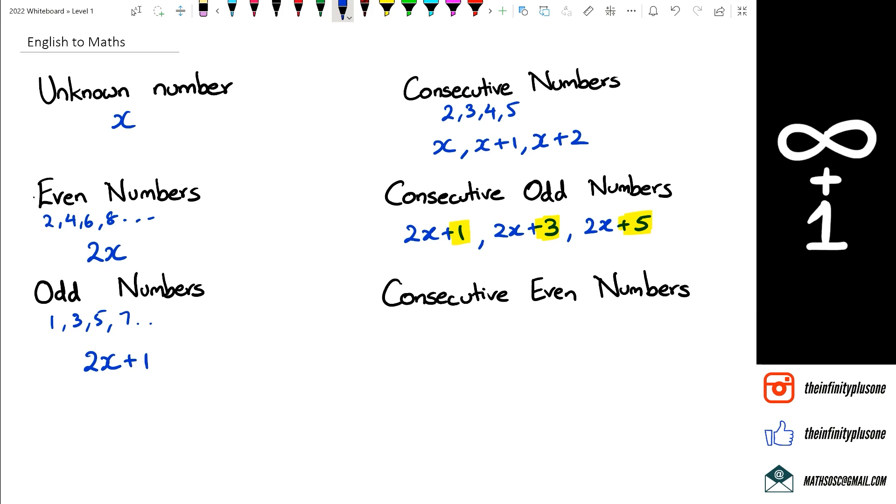When we look at consecutive even numbers, we're going to start off with 2x, but of course it's also increasing by 2, which means we're going to have 2x plus 2, 2x plus 4, and so on. And once again, if you notice, there is 2 getting added on to the even numbers, and so consecutive even numbers means that they're going to follow up after each other with 2 more than the previous one.